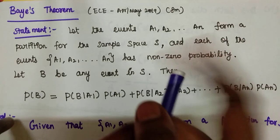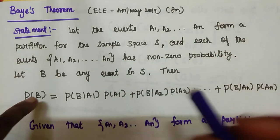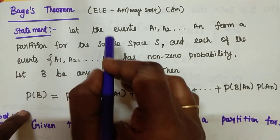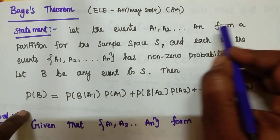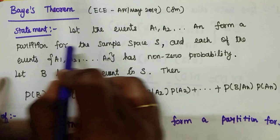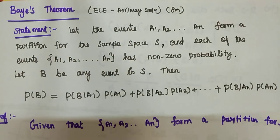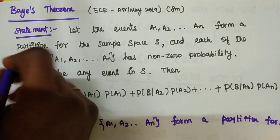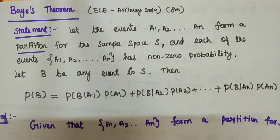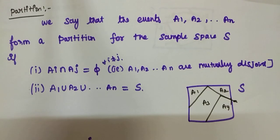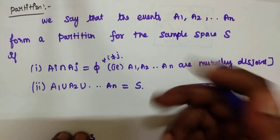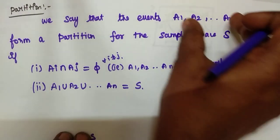The first statement is: let the events A1, A2, and so on to AN form a partition for the sample space. Partition is the first meaning. Partition is a set number of events.